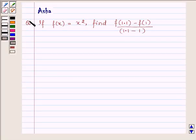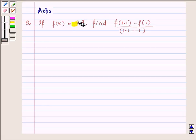Hi and welcome to the session. Let us discuss the following question which says if f(x) equals x square, find the value of f(1.1) minus f(1) upon 1.1 minus 1.